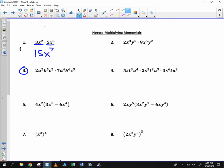Let's try number 3. 2 times the 7 gives us 14. It's going to be a to the sixth, b to the eleventh, and c to the fifth.